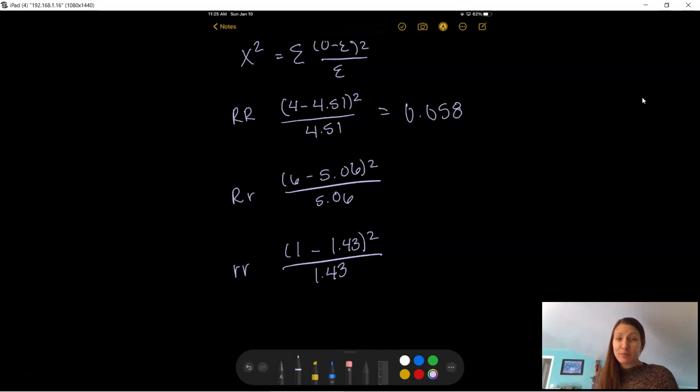And I'm going to get 0.058. You can keep as many decimal places as you want. You do not need more than three. I'm doing three here just because it's a pretty small number. I'm going to go to the next one, six minus 5.06. Then I square it. Then I divide by 5.06. That equals 0.175.